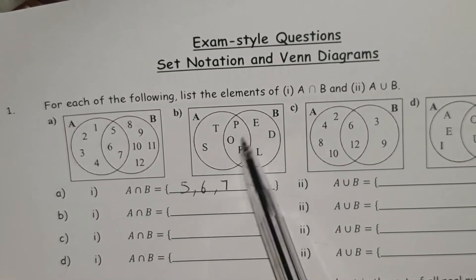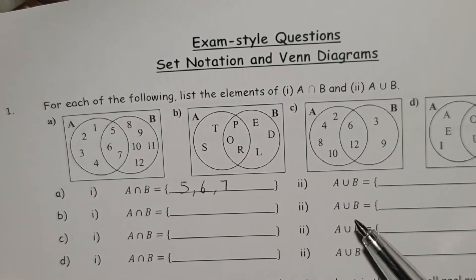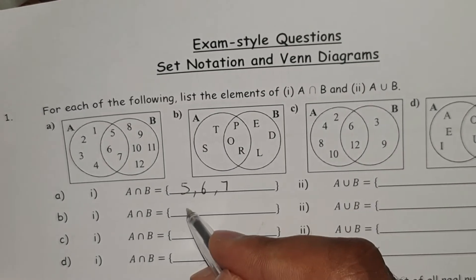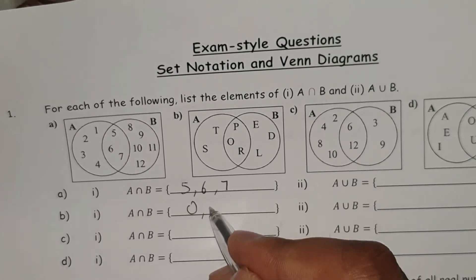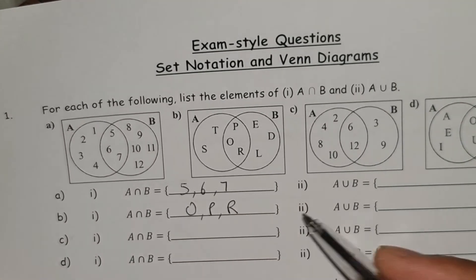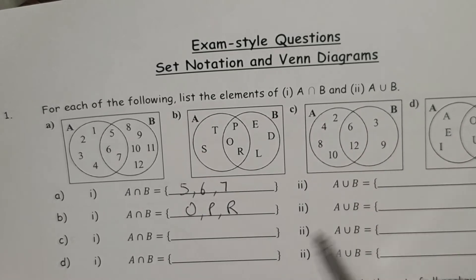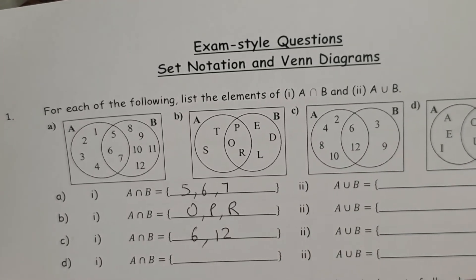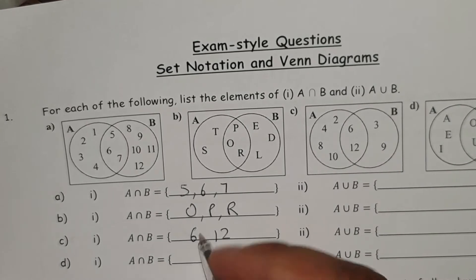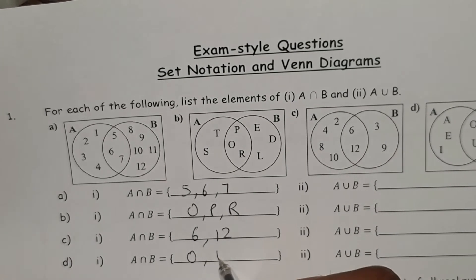The same would apply for B. This time it's a different letter so it's going to be O, P and R. Again, C, the intersection over there, so it's going to be 6, 12, and the last one is going to be O, U.